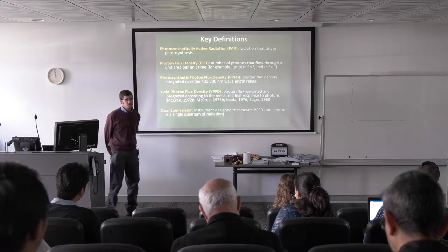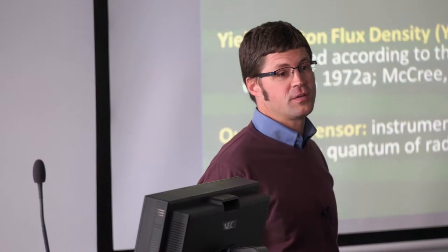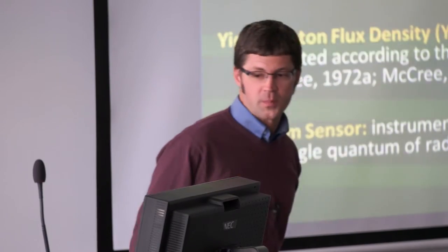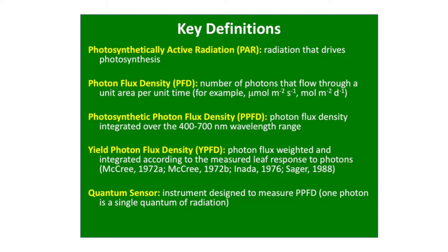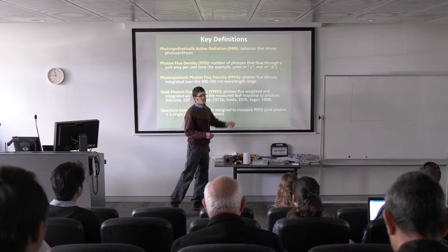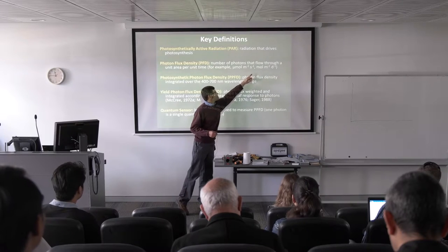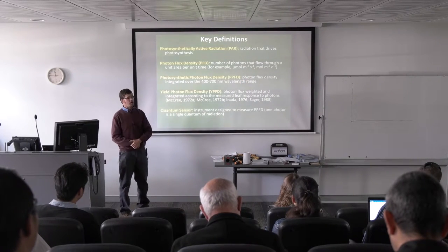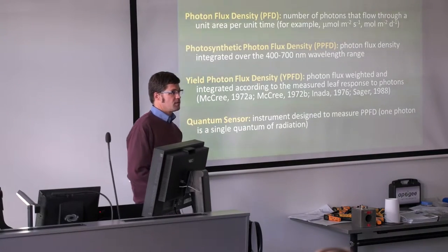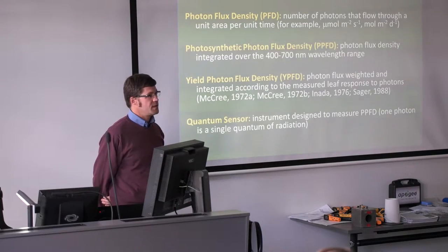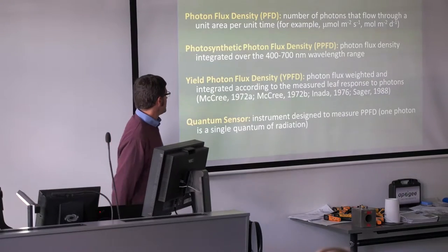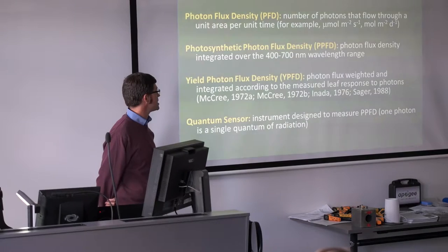Before we start talking about the sensors, here are just a few definitions. Photosynthetically active radiation is the radiation that drives photosynthesis. Photon flux density is just the number of photons that flow through a unit area per unit time. We count the micromoles of photons per meter squared per second as an instantaneous unit, or the moles of photons per meter squared per day on a daily time scale. The photosynthetic photon flux density, PPFD, is just the photon flux density integrated over our photosynthetically active range — the 400 to 700 nanometer wavelength range.